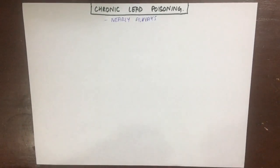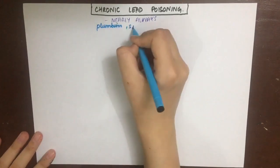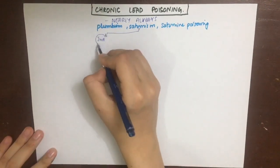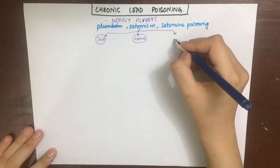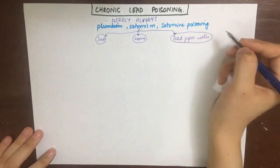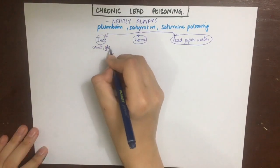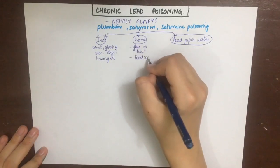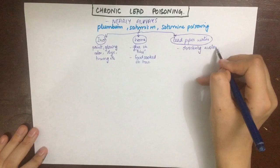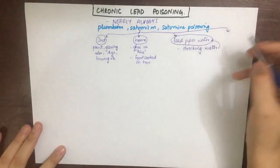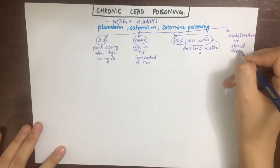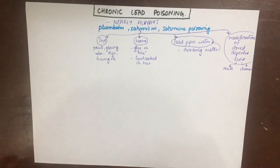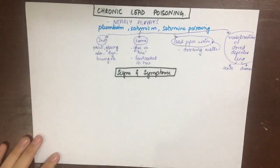Lead poisoning is nearly always chronic. It is also known as plumbism, saturnism, or saturnine poisoning. People can be chronically exposed to lead in industry, at homes, and through drinking water supplied via lead pipes. In acidosis, the deposited lead is mobilized from the bone, which can then manifest as acute or chronic cases of lead poisoning.